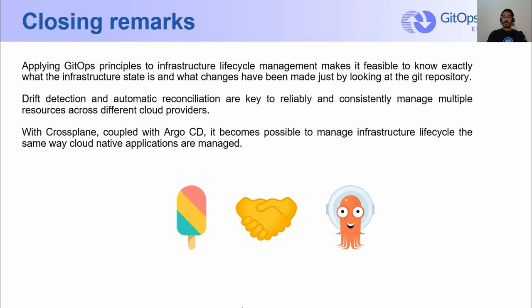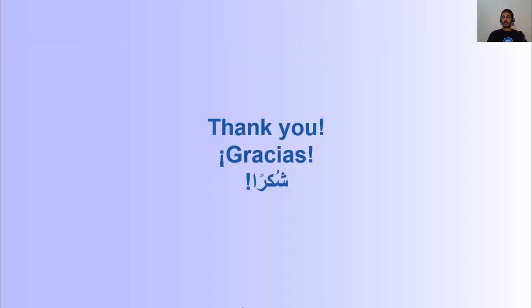It's a wrap. Applying GitOps principles to infrastructure lifecycle management makes it feasible to know exactly what the infrastructure state is, along with the other advantages it provides, such as reviewing changes and detecting configuration drifts. Drift detection and automatic reconciliation are key to reliably managing multiple resources across cloud providers. With Crossplane coupled with Argo CD, it becomes possible to manage infrastructure the same way cloud-native applications are managed. Simply put, treating infrastructure like apps means managing its lifecycle following the same GitOps principles to prevent manual fiddling that does not conform to Git workflows. And that's about it folks. Thank you.